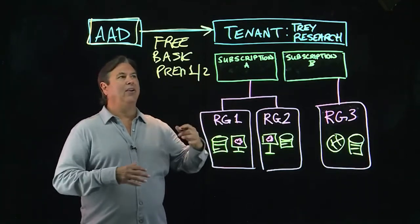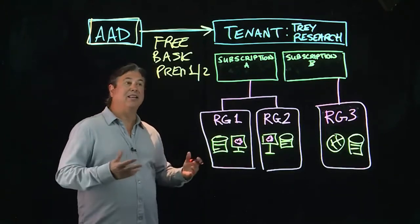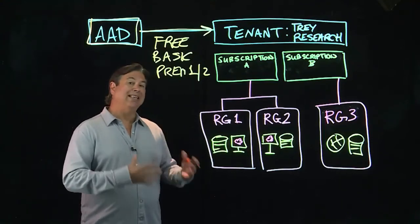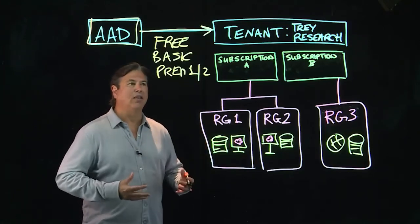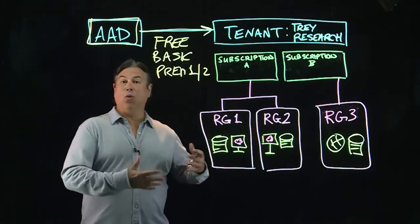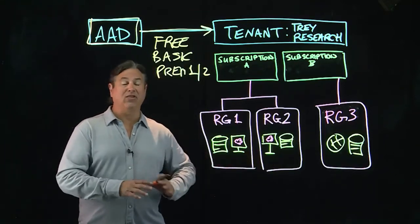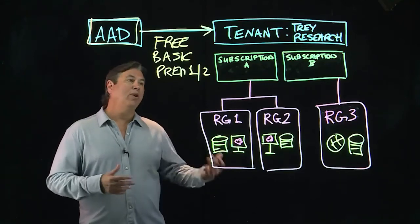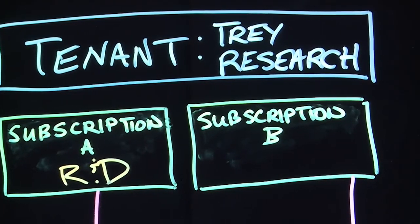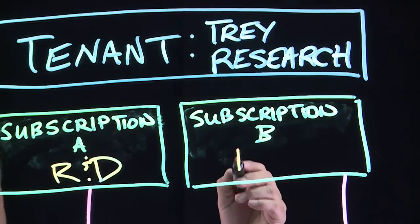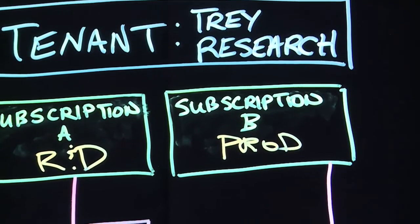Here we have our tenant using the fictional Tray Research, which we can use from Microsoft. By default, in a multi-tenancy model, each tenant would have its own directory. Under the tenant, the next level of the hierarchy, we have our subscription. You can have one or more subscriptions. We're just going to deal with one tenant and one subscription for the exam. So we could have subscription A for R&D and subscription B for production.